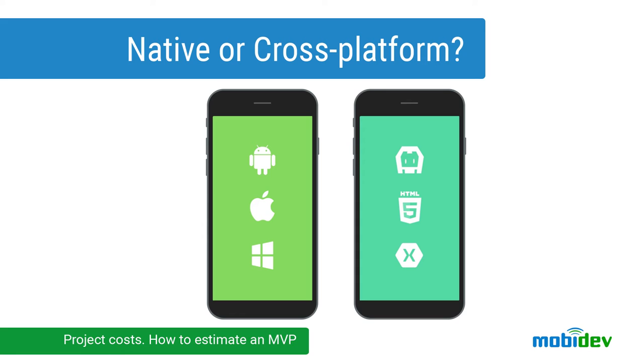In order to create good requirements, it's important to decide on covered platforms and technologies. It may be native or cross-platform development. Native development makes a highly responsive application which can utilize all the capabilities of the operating system. Cross-platform development works best for products which should be launched as soon as possible with minimal expenses and works on several platforms.